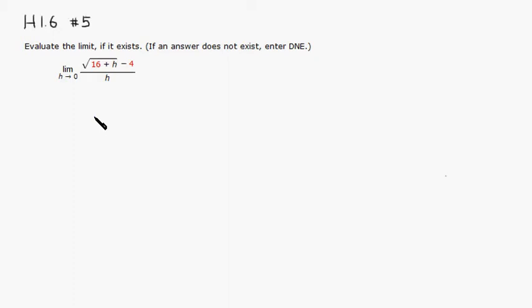First thing we should try is plug in h equals 0. You can see that the denominator goes to 0, and if you plug in 0 here, square root of 16 plus 0 would be 4 minus 4. So you can see that the numerator also goes to 0. So we have to do something.